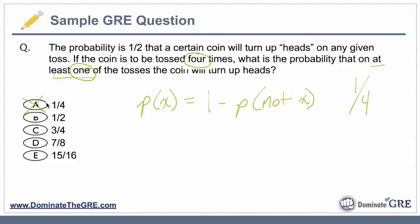Now let's apply some logic and common sense. Which other answer choices don't make any sense? One-half doesn't make any sense. Why? Because the probability is one-half that you will get heads on one flip of a coin. Let's draw this out on your scratch paper: we're going to flip the coin once, then twice, then a third time, and then a fourth time.